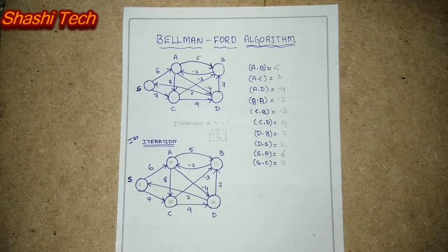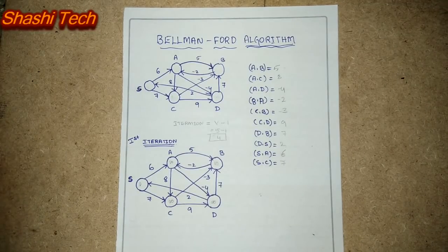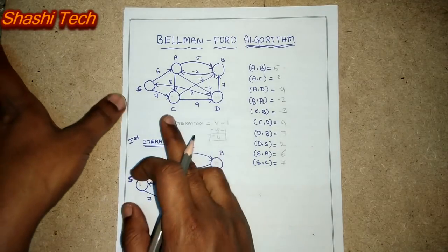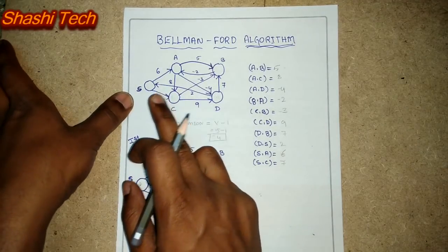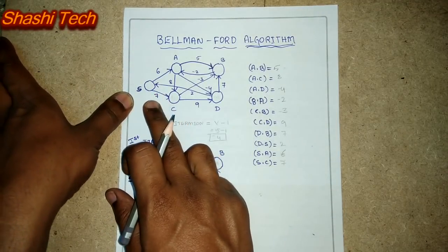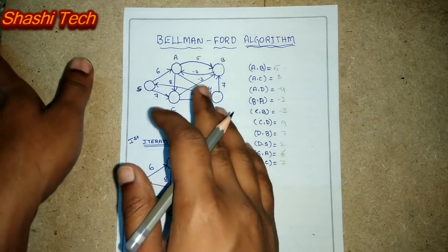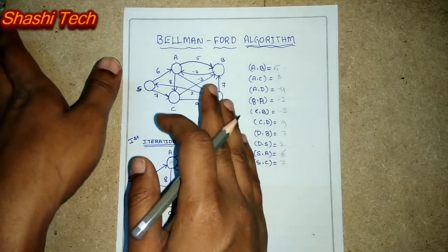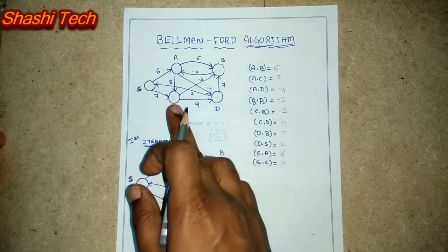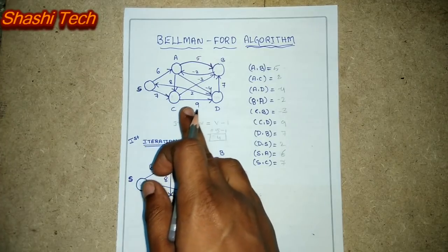Hello everyone, this is Shashi from Shashi Tech. In this video we shall discuss how to find the solution to the Bellman-Ford algorithm problems. As you all know, the Bellman-Ford algorithm is used to find the shortest path. To find the path there should be a source and a destination. We have selected vertex S as the source. In some problems they will mention which vertex will be the source. I have considered S as the source.